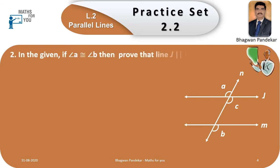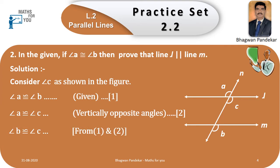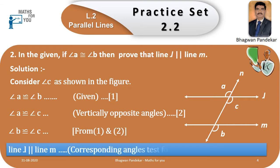Example number two: In the given figure, if angle A is congruent to angle B, then prove that line l is parallel to line m. Solution: Consider angle C as shown in the figure. Angle A ≅ angle B — given (equation 1). Angle A ≅ angle C — vertically opposite angles (equation 2). Therefore, angle B ≅ angle C from equations 1 and 2. Therefore, line l is parallel to line m by the corresponding angle test for parallel lines.